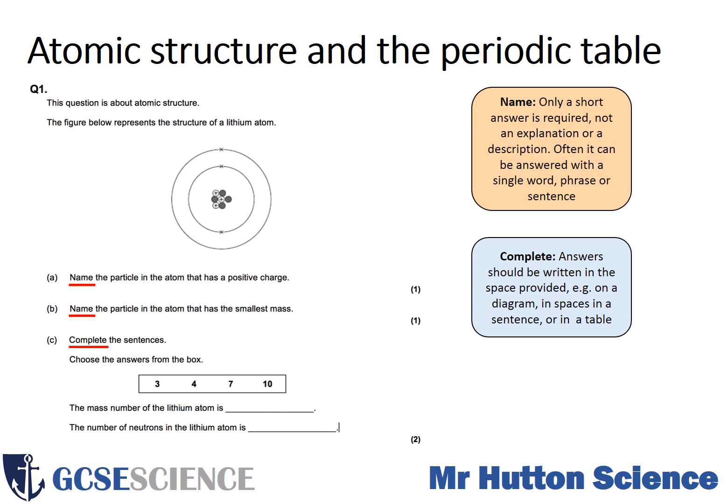Part B is: name the particle in the atom that has the smallest mass. A hint here is that the mass of an atom is concentrated in the nucleus. So if you know what particles are in the nucleus and what particles are on the outside of an atom, then you'll be able to answer this question.